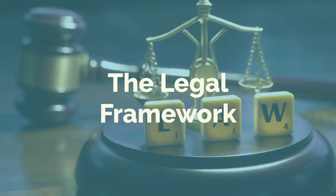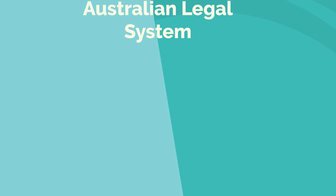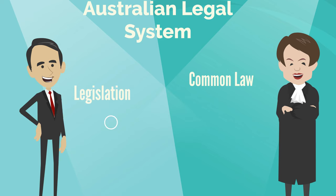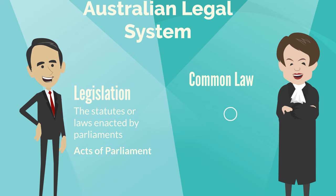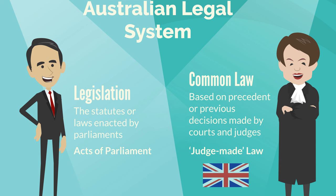To understand the legal context for child protection laws in Australia, we will take a brief look at our legal system. In Australia's legal system there are two kinds of law: legislation and common law. Legislation means the statutes or laws enacted by parliaments — state, territory, and/or the federal or Commonwealth — and these are called acts of Parliament. Common law is a body of law built up over many years based on precedent or previous decisions made by courts and judges.